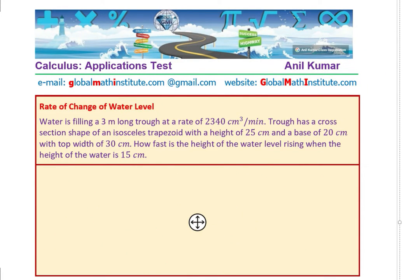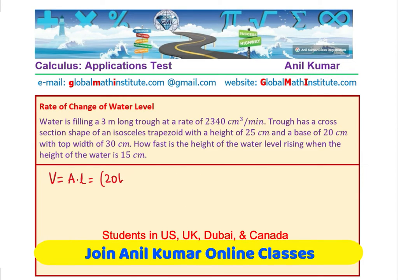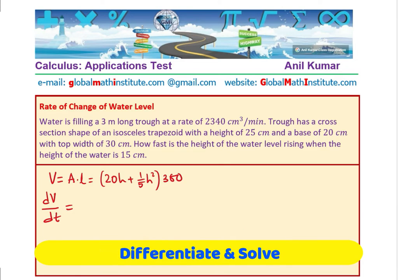Take the derivative and do the needful. Volume which is area into the length is 300 times 20h plus one fifth of h squared. Taking derivative with respect to time, we get dV/dt equals to derivative of 20h is 20, plus one fifth of h squared, times dh/dt. We are differentiating with respect to time. Plus 2 over 5 h dh/dt, times 300.